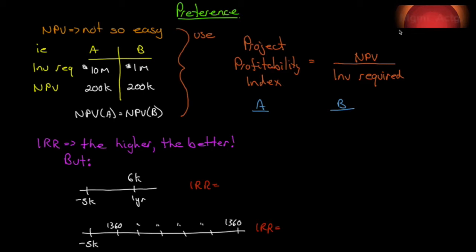Once we've gone through the screening process — and that's what net present value and IRR will do for us — we're ready to choose among all the ones that made it through. So let's look at how we would select something with NPV, and then we'll look at how we would select something with IRR.